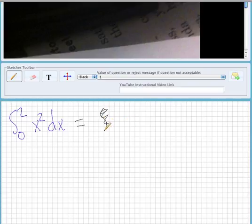To do that, we're going to use the power rule, so that's x to the third over 3. And we're going to evaluate that from 0 to 2.